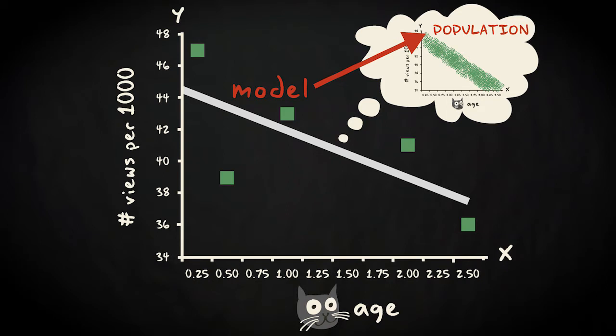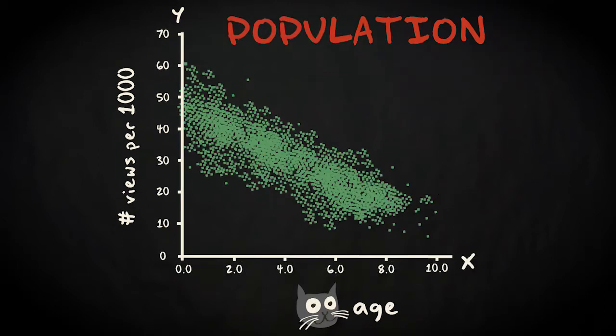Okay, that all sounds pretty abstract. So what exactly do we model in the population? Of course, it's impossible, but suppose for a second that we could gather information about cat age and popularity for all cat videos that have ever been available online.